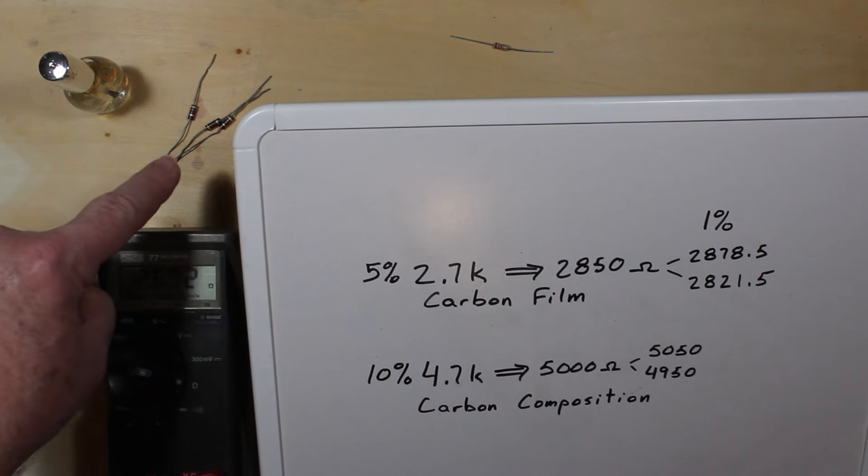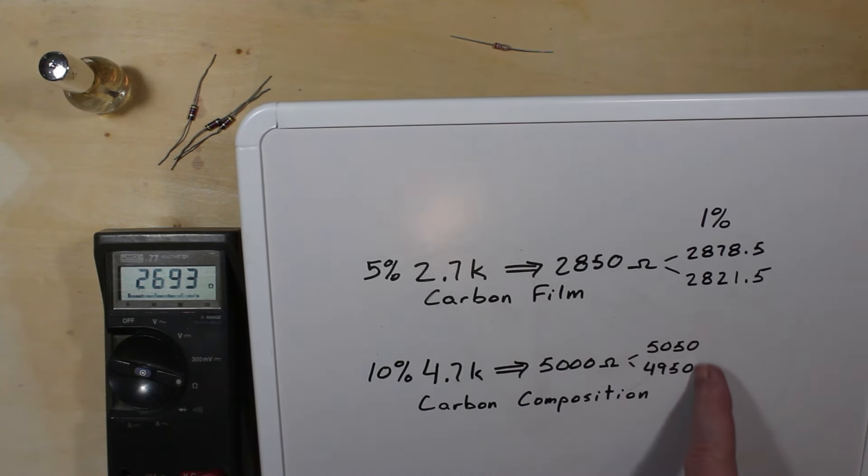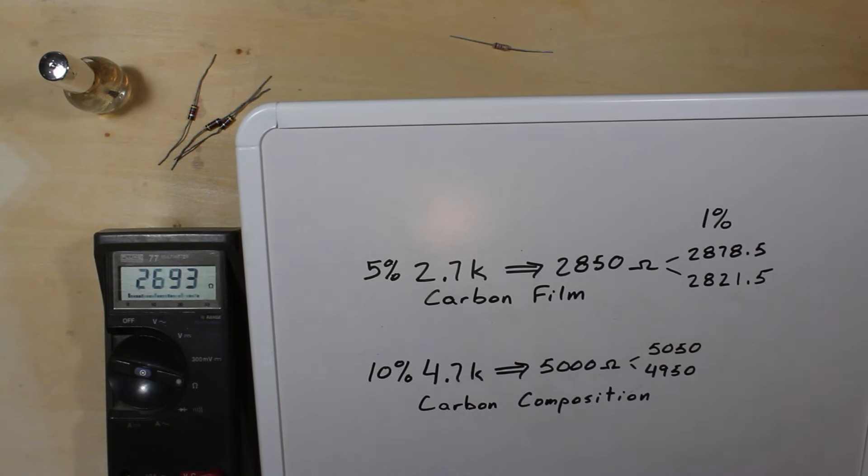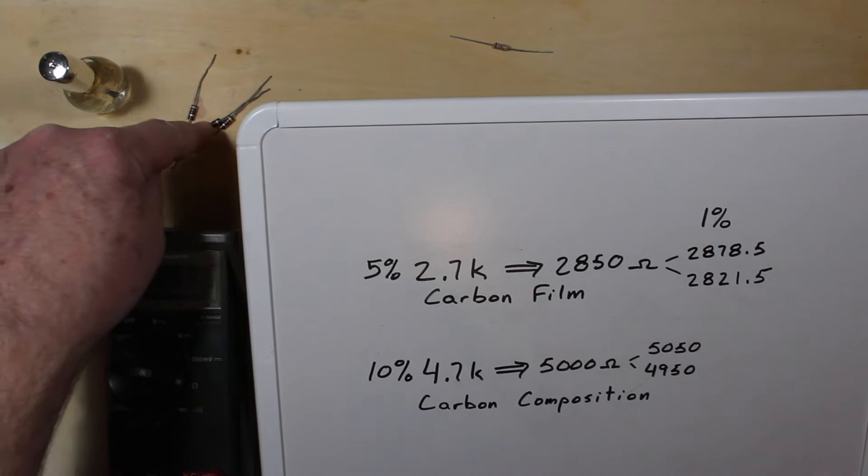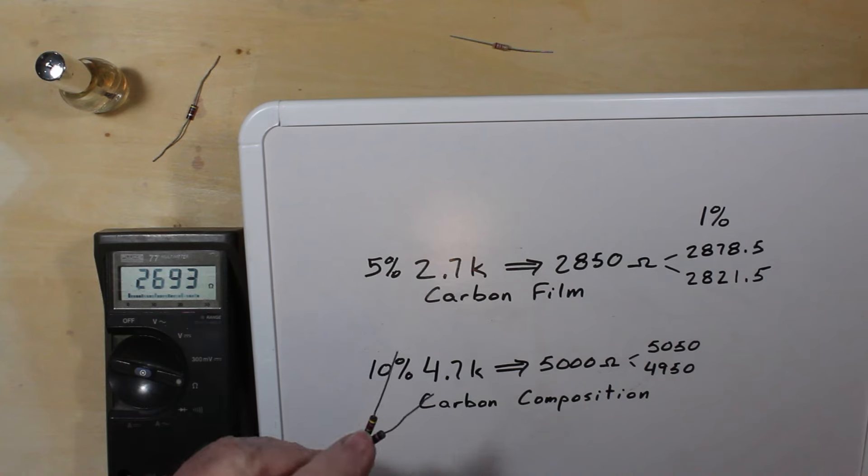I've got these carbon composition ones over here, they're 4.7K, the 4700 ohms. We're going to put them up to 5000 ohms even and we're considered within 1% plus or minus 50 ohms of 5000, that would be 1%. These guys are 10% right now, you don't see those too often anymore if at all, silver, 10%.